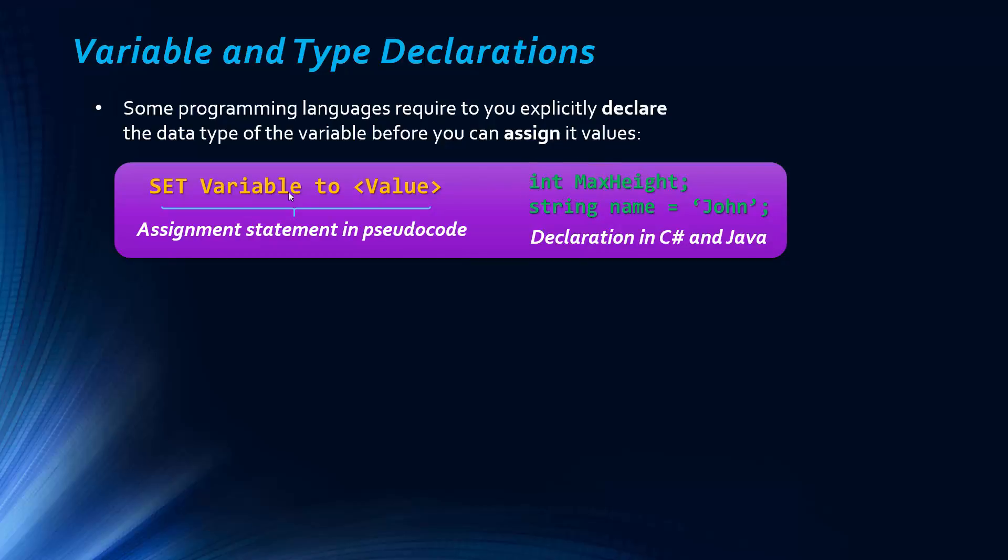This is just an assignment in pseudocode. So this is the edXL pseudocode. And int maxHeight, this is declaring this variable maxHeight as an integer.